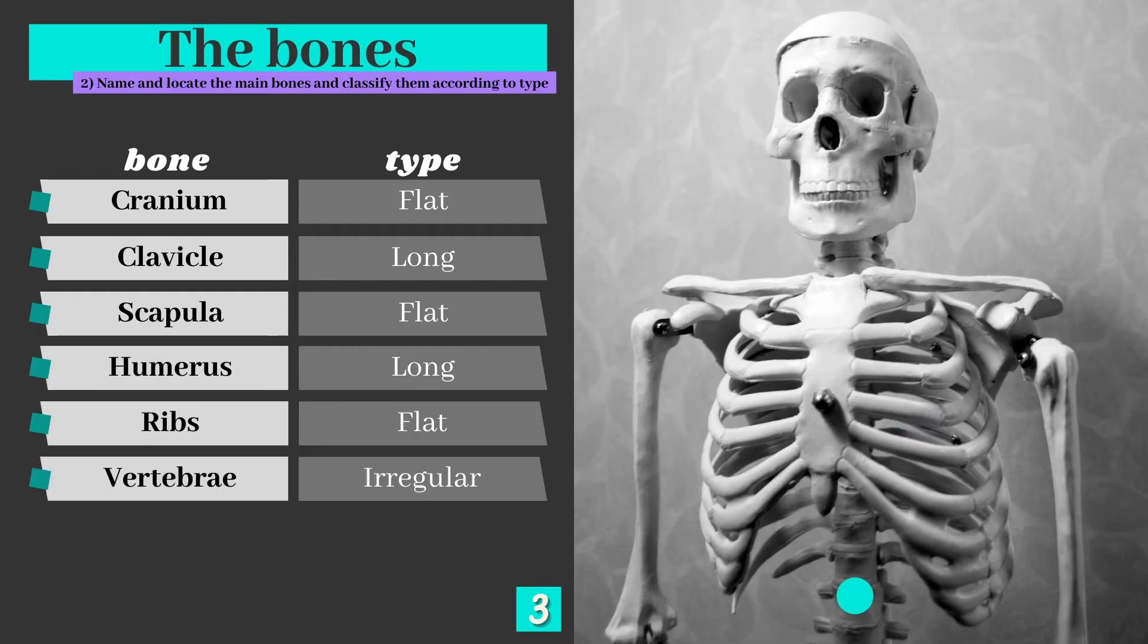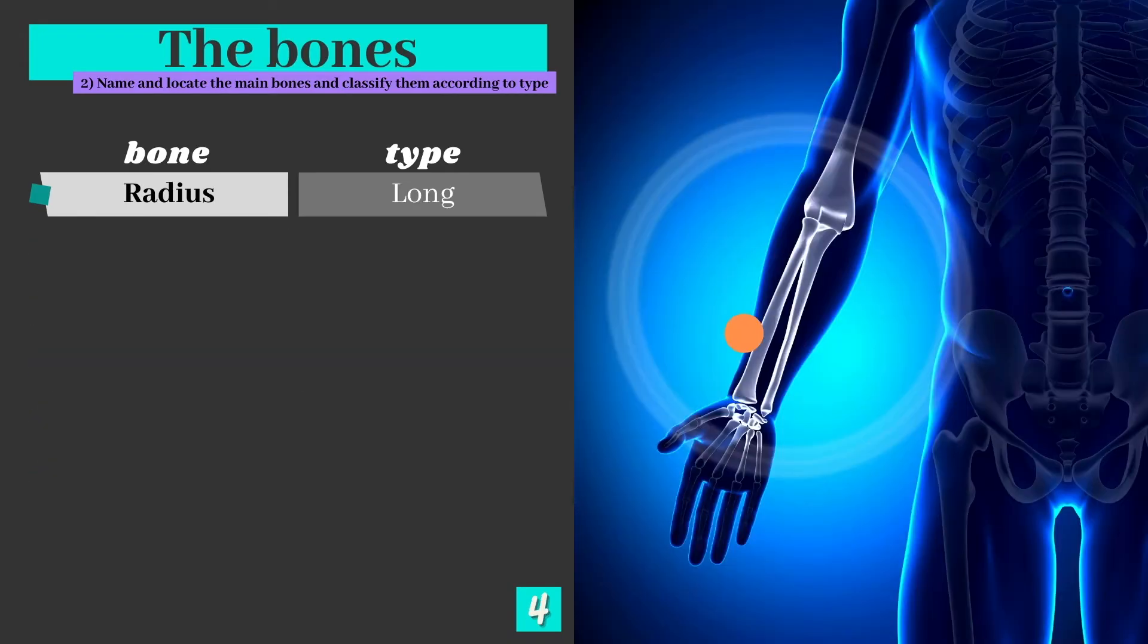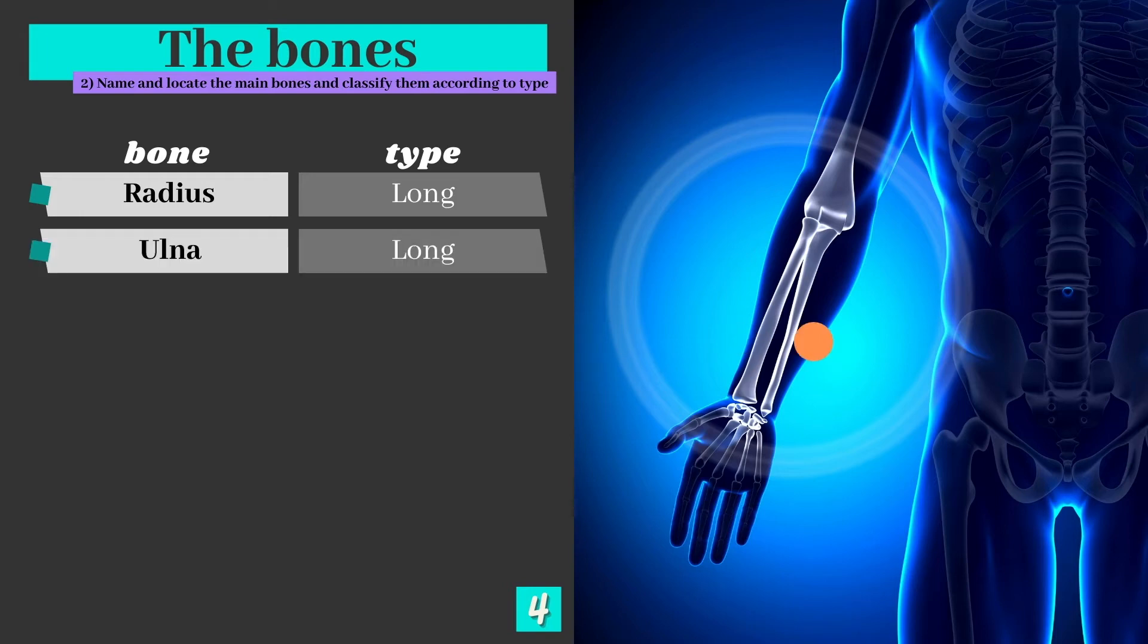The vertebrae are irregular bones. They stack on top of one another to form the spine. There are two bones in the forearm and the radius is the one that sits in line with the thumb. The other one is the ulna, which is also a long bone and sits alongside and works with the radius.